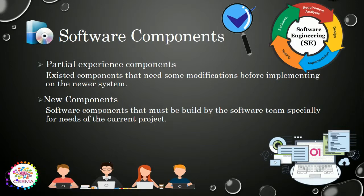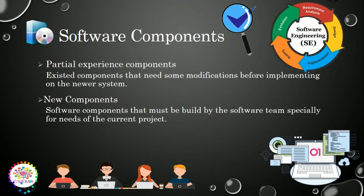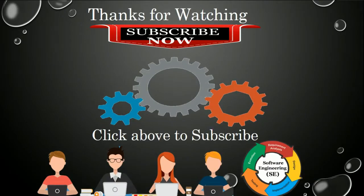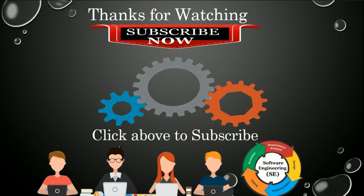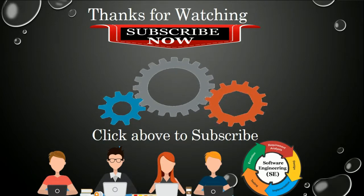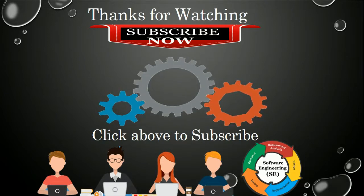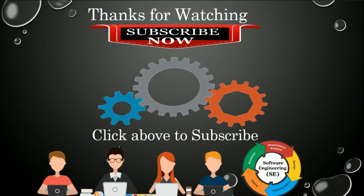The last type is the new component. New components are components that must be built by the software team especially for the current project's needs. If the software team has a project to complete, they create some new components to build that product. These are the four types of software components that build any new software system, make modifications, or update an existing system. Thank you, thanks for watching, I hope you liked the video.